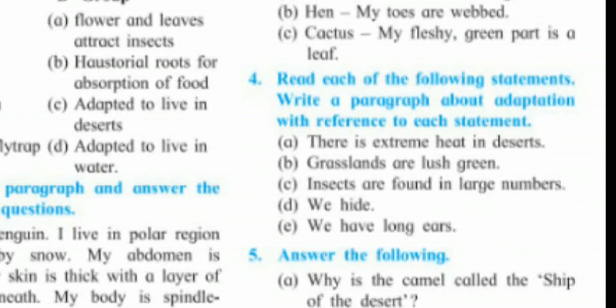Statement three: 'Insects are found in large numbers.' Insects have two pairs of wings which help them fly — this is one adaptation. Some stay near water bodies, some are also found in deserts. They can reproduce in large numbers. Due to all such adaptations, insects are found in large numbers.